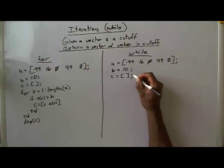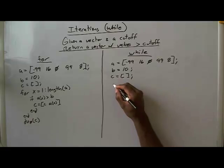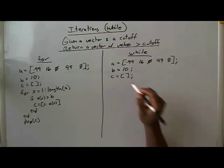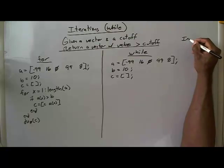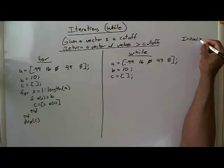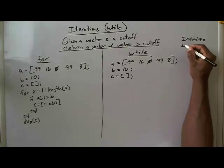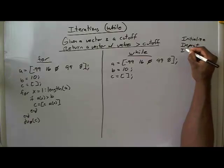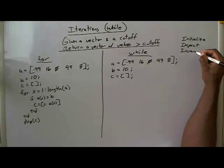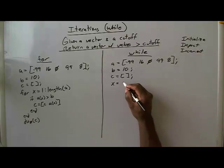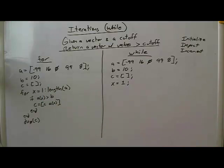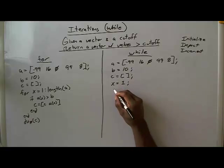We set up our result vector C. Now keep in mind our steps: we have to initialize, we have to inspect, and we have to increment. So we have to initialize a loop variable, which will be x equals 1. We'll start x off at one, much like on the for loop side — the for loop is going to take care of all this for us automatically.